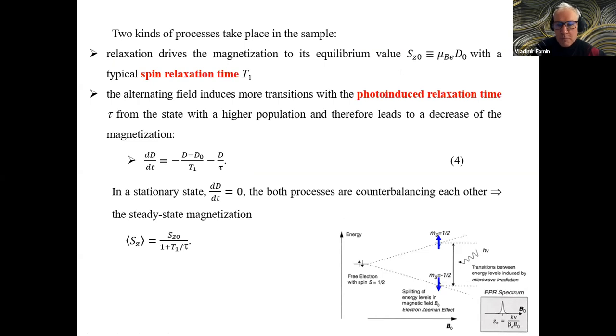In this case, two kinds of processes take place. The relaxation drives the magnetization to its equilibrium value. This thermodynamic trend remains, but the alternating field induces more transitions with some photo-induced relaxation time from the state with a higher population to the state with a lower population, and leads to a decrease of magnetization. This simple equation governs this magnetization. In a stationary state, both processes are counterbalanced, and we have the steady-state magnetization.